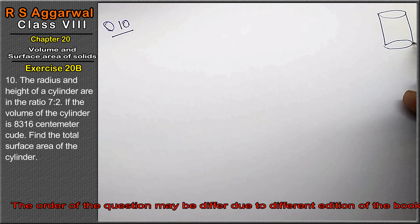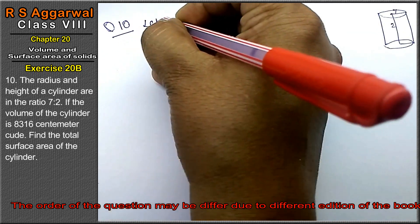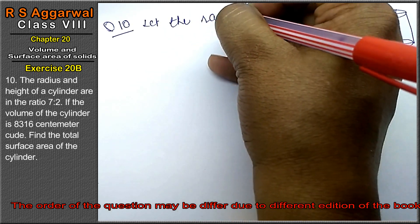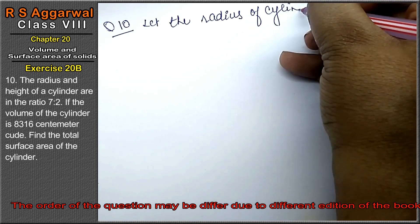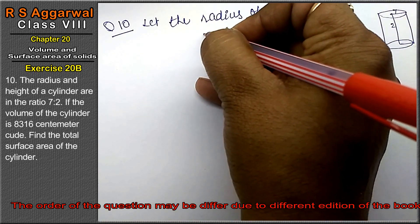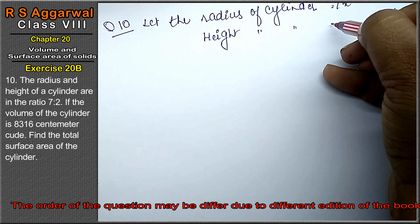This is our cylinder. Friends, its radius and its height are in the ratio. If our radius is in the ratio 7, then the height is in the ratio 2. So let the radius of cylinder equals to 7x, and height of cylinder equals to 2x.